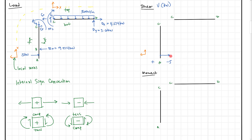So we go from minus 5 kilonewtons up by 9.514, which brings us to about 4.514 kilonewtons. There's no change in load along the rest of the beam, so we carry this value all the way up. We know that CX is going to bring this back to zero — we never solved for CX, but 5 and 9.514 means we need another 4.514 to close it, so this comes back to zero. That's our shear diagram.